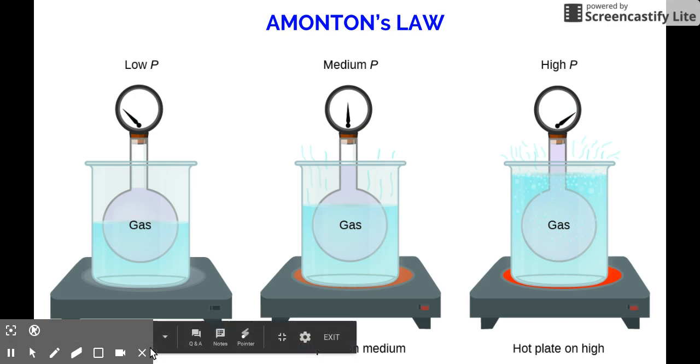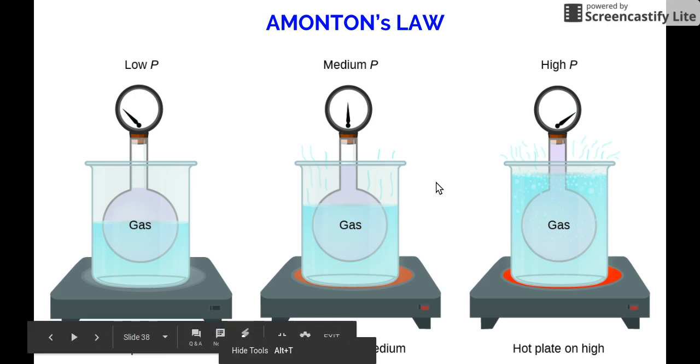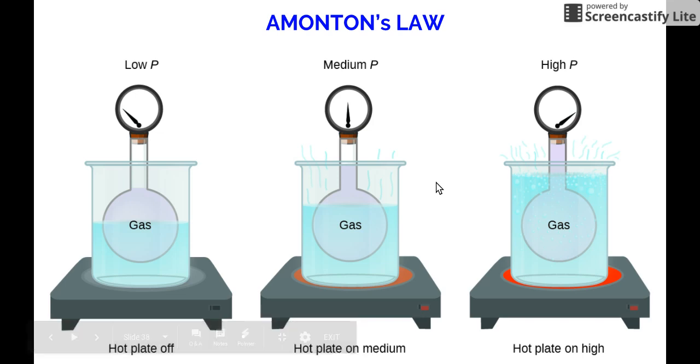Looking at this diagram here, you would see that the hot plate is off at first, then it's turned on to medium temperature, and then third it was turned on to high. The pressure on top will give us a different measurement of its value. When the hot plate is off, you will notice that the pressure is low.